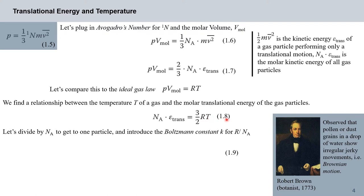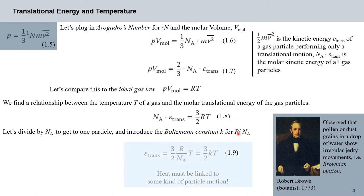Comparing equation 1.7 to the ideal gas law — pV_mol = RT — we find a relationship between temperature and the translational energy of gas particles: N_A times ε_trans equals three halves RT. Dividing both sides by Avogadro's number and introducing the Boltzmann constant k = R/N_A, we obtain equation 1.9: ε_trans = 3/2 kT. This links temperature to particle motion.